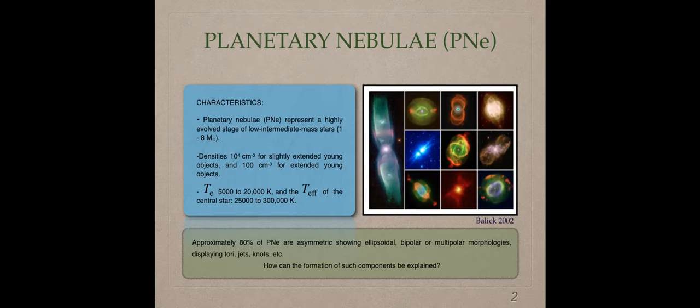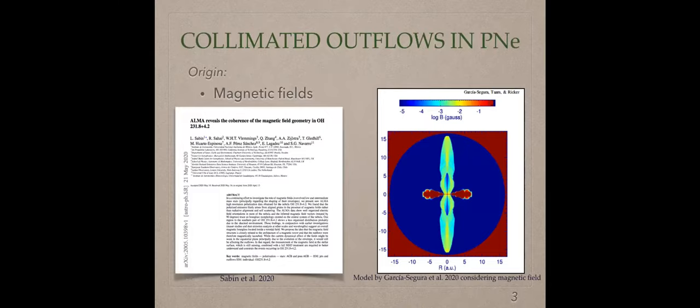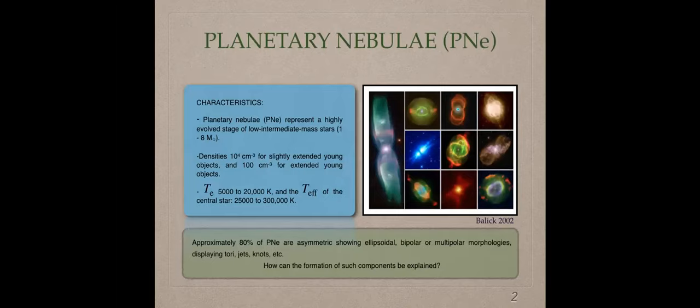In the right image, we can observe different planetary nebulae. One of the most important things in this image is that we observe different morphology of this object. We found, for example, bipolar planetary nebulae, quadrupolar planetary nebulae, spherical, ground, etc. Approximately 80% of planetary nebulae are asymmetric.